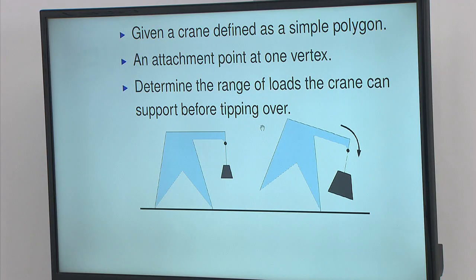The idea is you're given a description of cranes. It's described as a simple polygon just by listing the vertices. Some of those vertices are going to sit on the floor, and one of those vertices is going to be an attachment point for weight.